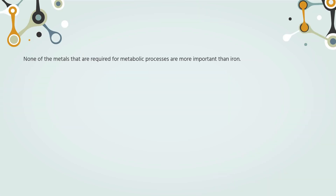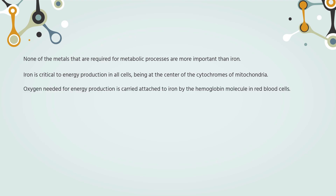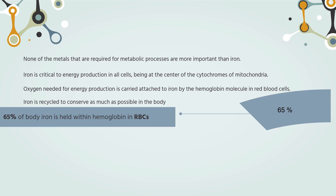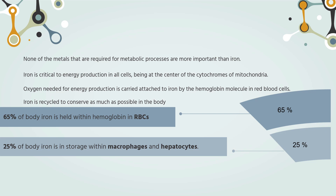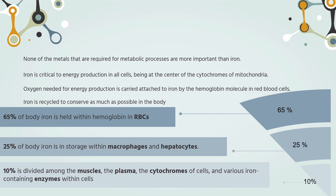None of the metals required for metabolic processes are more important than iron. It is critical to energy production in all cells, being at the center of the cytochromes of mitochondria. Oxygen needed for energy production is carried attached to iron by the hemoglobin molecule in red blood cells. Iron is so critical that there is no mechanism for active excretion and it is recycled to conserve as much as possible. The largest percentage of body iron, nearly 65%, is held within hemoglobin in red blood cells of various stages. About 25% of body iron is in storage, mostly within macrophages and hepatocytes. The remaining 10% is divided among the muscles, the plasma, the cytochromes of cells, and various iron-containing enzymes within cells.